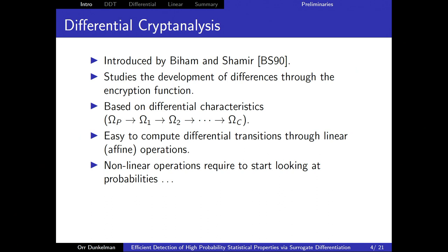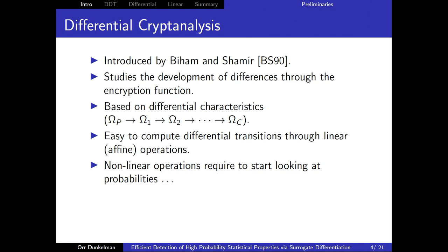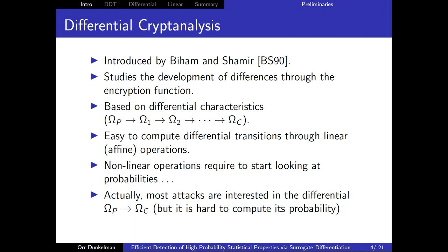A quick recap: differential cryptanalysis, introduced by Biham and Shamir in 1990, studies the development of differences through the encryption function. A differential characteristic predicts how differences evolve throughout the encryption rounds. For linear operations we know exactly how differences evolve; for non-linear operations we work with probabilities. We usually care about the probability of the differential — the input/output difference — and find characteristics as a lower bound on that probability.